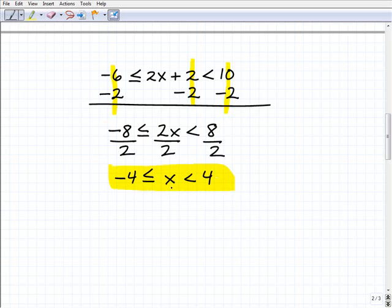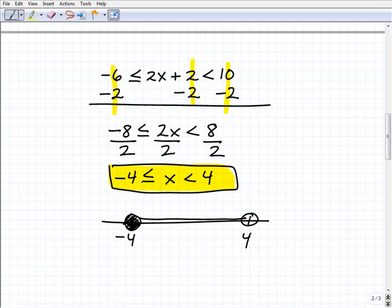So these are all the numbers x in between negative 4 and 4. Let me show you graphically what that looks like. All the numbers that are greater than or equal to negative 4 but less than 4. So this is the graph that goes with that. If you kind of read this, all the numbers x that are greater than or equal to negative 4, however, at the same time they're less than 4, this is the graph.